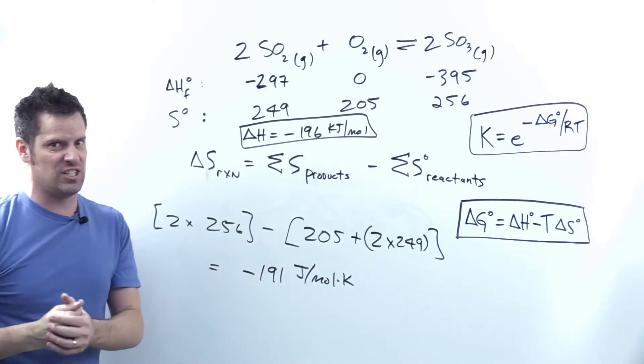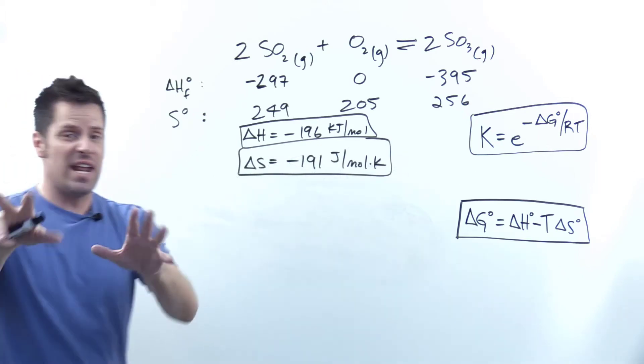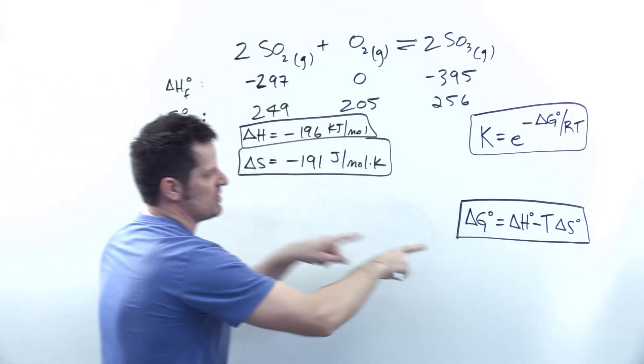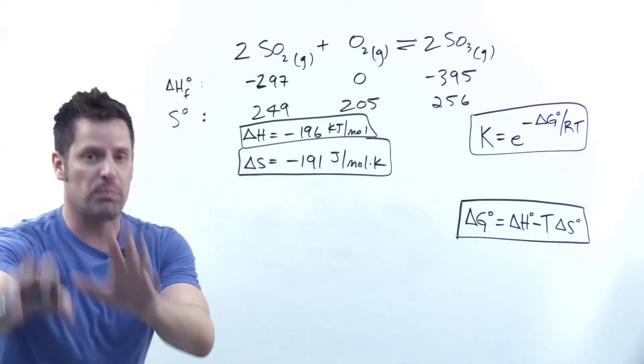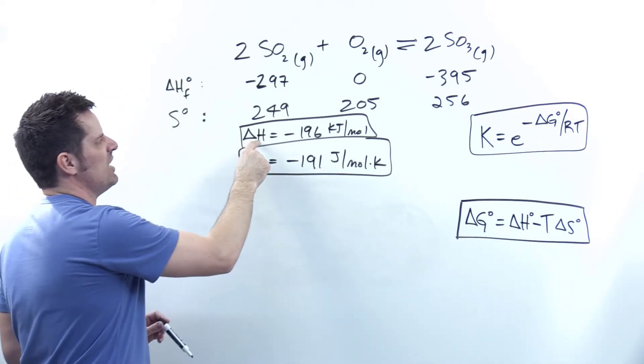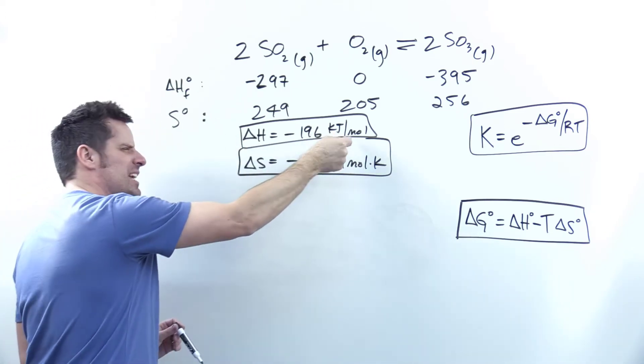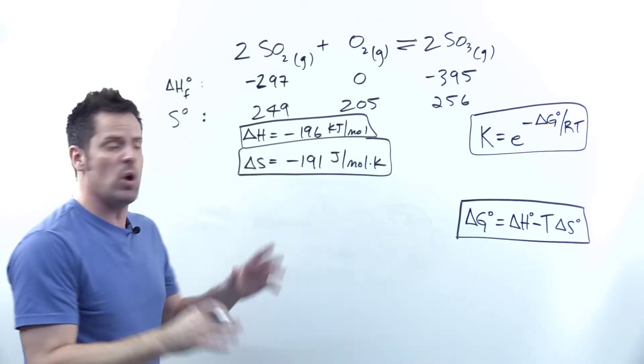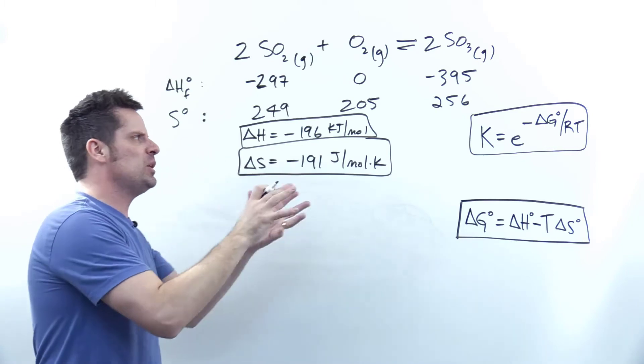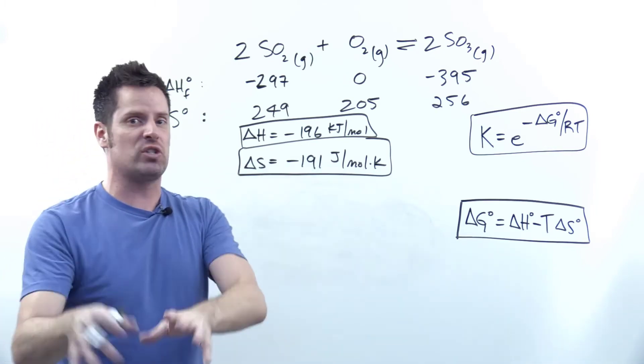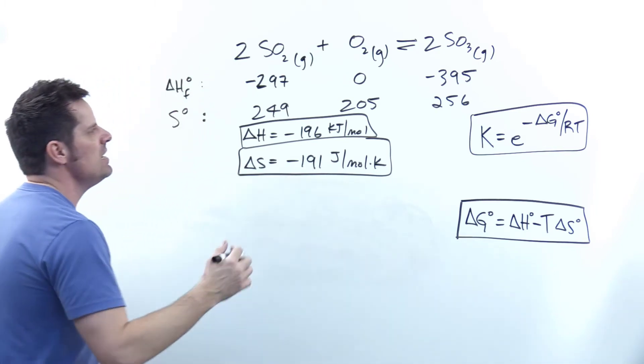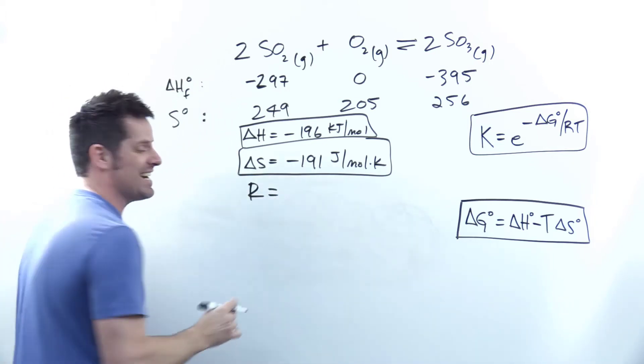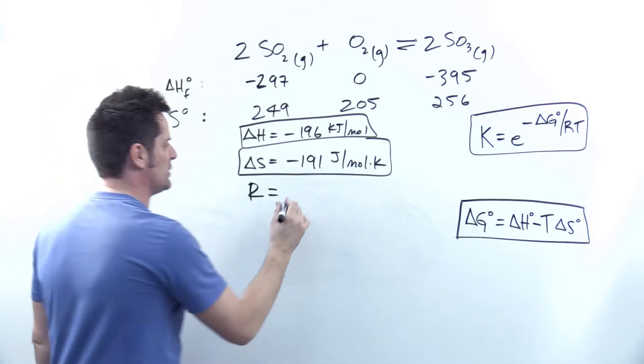For the next phase, I need to solve for delta G by inserting these terms into the equation. There's a problem: delta H has units of kilojoules per mole, whereas delta S is joules per mole Kelvin. The answer comes down to the identity of R, the ideal gas constant.